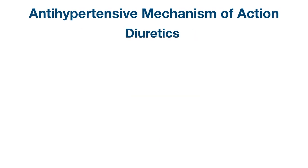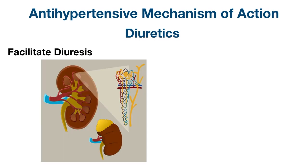The final main class of antihypertensives is diuretics. As the name suggests, diuretics facilitate diuresis in the kidneys. The kidney is made up of functional units called nephrons that work to reabsorb, secrete, and excrete various substances.